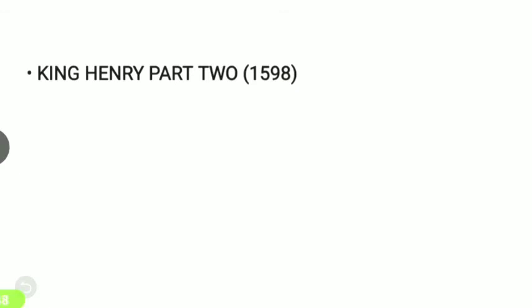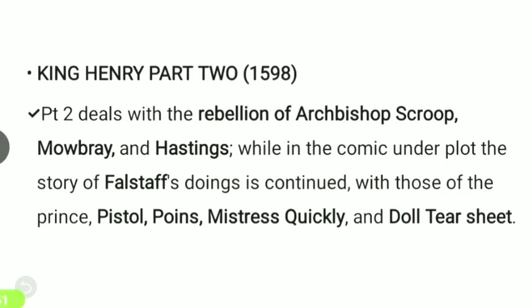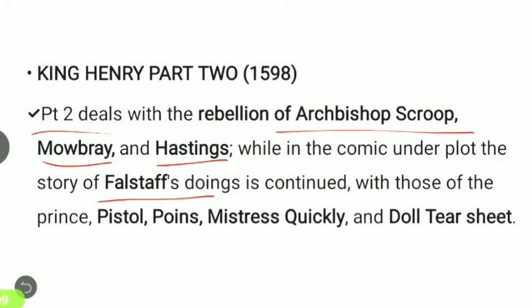King Henry IV Part 2 came in 1598. Part 2 deals with the rebellion of Archbishop Scroop, Mowbray, and Hastings. In the comic underplot, the story of Falstaff is continued for comic effect, along with the characters of Prince Hal, Pistol, Poins, Mistress Quickly, and Doll Tearsheet.